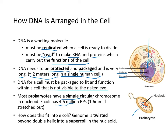Prokaryote DNA is not circular as shown here, but it actually is circular, coiled up in a region called the nucleoid. E. coli has about 4.6 million base pairs, which is about 1.6 millimeters if stretched out. The genome is twisted beyond the double helix into a supercoil in the nucleoid.